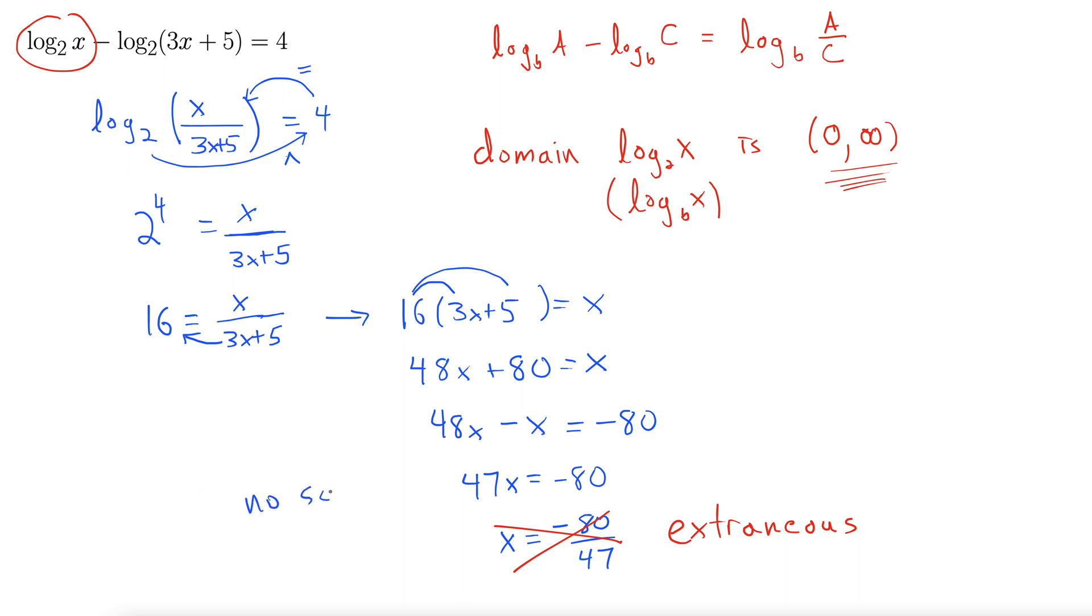We could write no solution. No solution for an answer here. That's a good answer. You could also write, just simply write the empty set. Right, empty set means this is the set with nothing in it. So we're offering our set of solutions, and we're saying, look, our set of solutions is empty because there are no solutions.